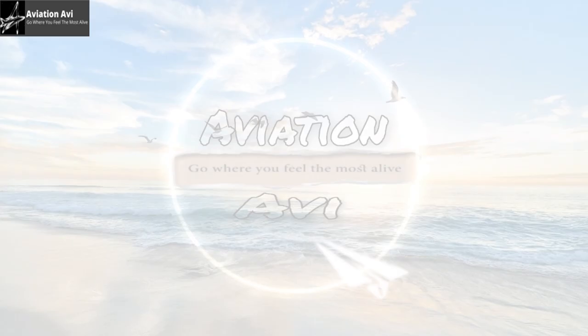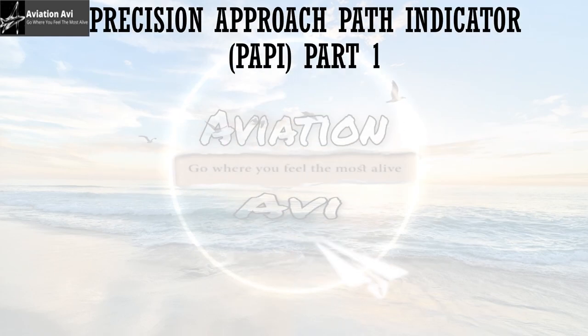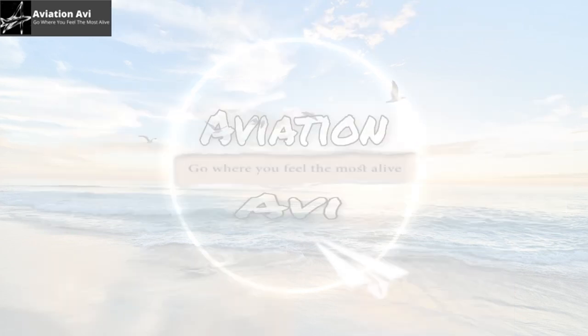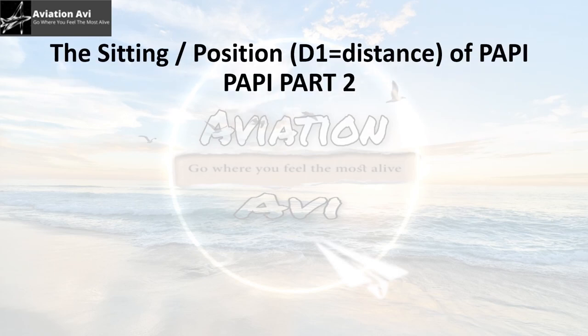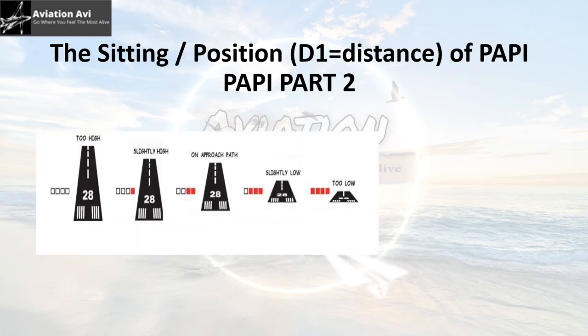Hello and welcome back to our YouTube channel AviationAvi. Our last video on Precision Approach Path Indicator Part 1 was all about its use, its specification, and its structure. We'll be taking care of the D1 distance, as already discussed in Part 1 — the position or the D1 distance of the PAPI from the threshold. If you haven't watched our video on Part 1, please go through it for a better understanding of this video.